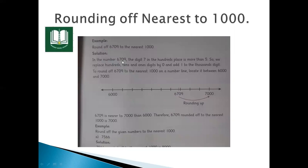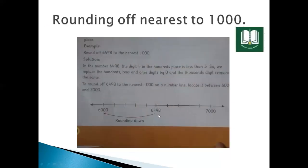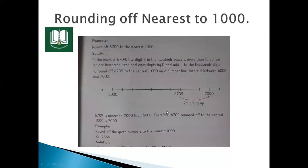Next example, 6709: the ones digit is 9, the tens digit is 0, and the hundreds digit is 7. Since 7 is greater than 5, we round up. So 6709 rounds up to 7000. And for 6498, since the hundreds digit 4 is less than 5, we round down.